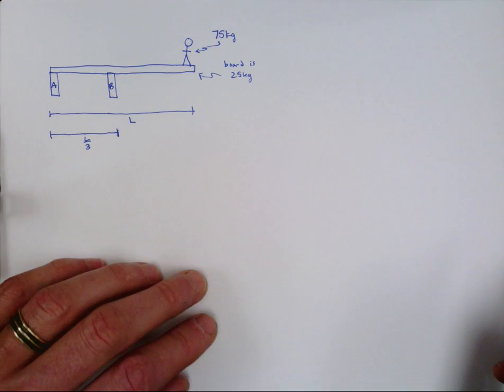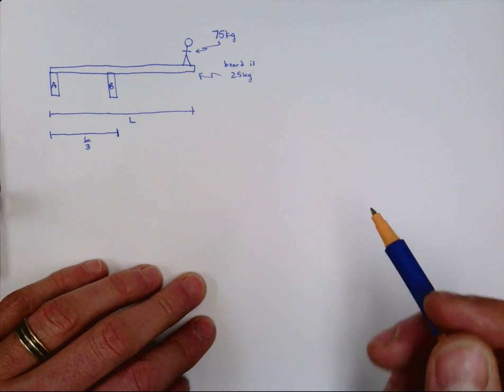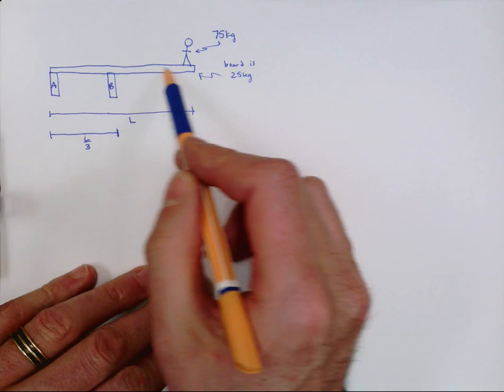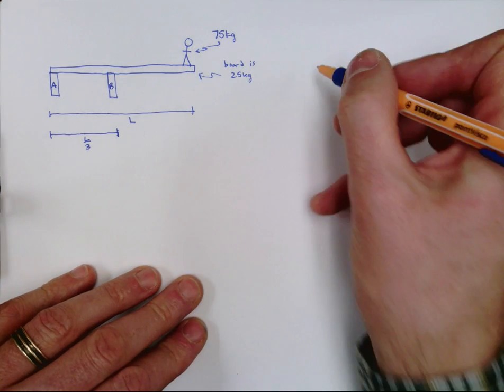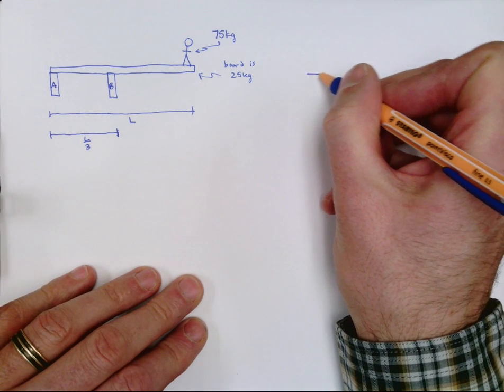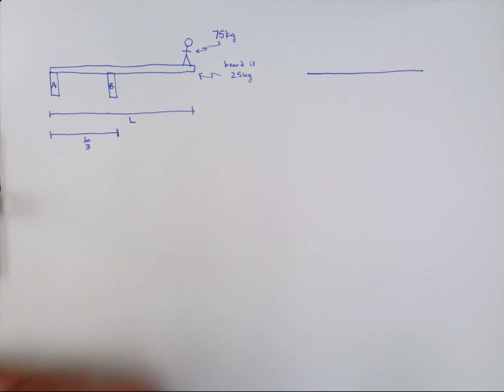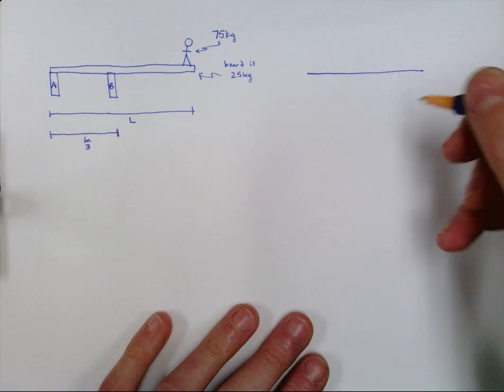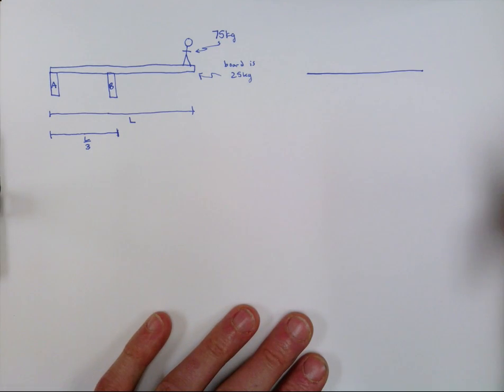So we're going to draw a free body diagram. When you have an elongated object like a diving board, you can't really represent it as a point. You have to draw a line and we're going to draw the various forces that are acting on it at the different locations where they're actually being applied.